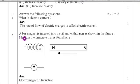Fifth question, a bar magnet is inserted into a coil and withdrawn as shown in the figure. Mention the principle that is found here. Here there is a circuit. In the coil, when they are passing the magnetic bar, what happens? This will give the EMI. That means electromagnetic induction. Therefore, the answer is electromagnetic induction.